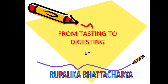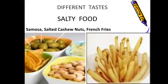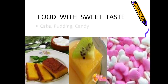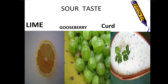What are the different tastes? Some food items taste salty — samosa, salted cashew nuts, french fries. Next, there are food items which taste sweet — cake, pudding, candy, ice creams, chocolates. Then there are food items which taste sour, like lime, gooseberry, and curd.